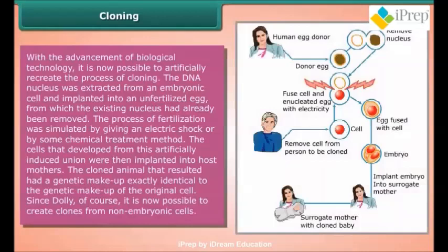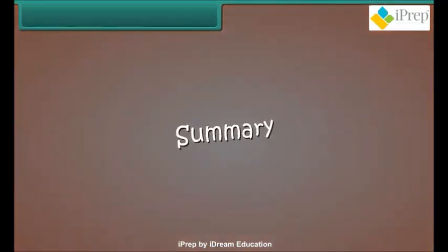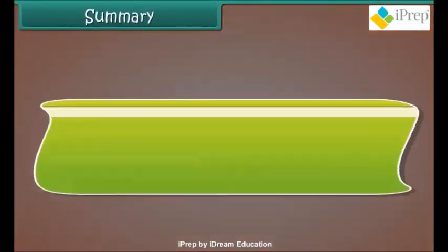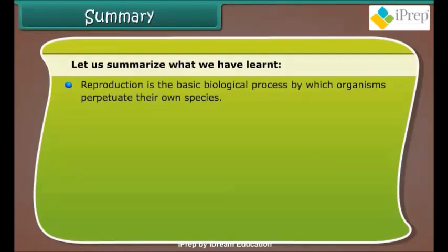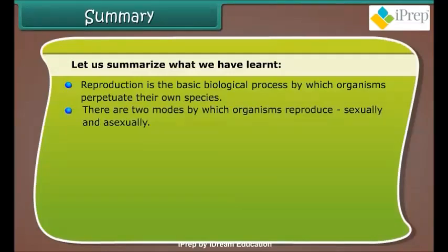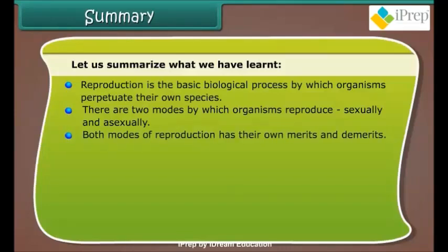Since Dolly, it is now possible to create clones from non-embryonic cells. Summary: Reproduction is the basic biological process by which organisms perpetuate their own species. There are two modes by which organisms reproduce — sexually and asexually — and both modes have their own merits and demerits.